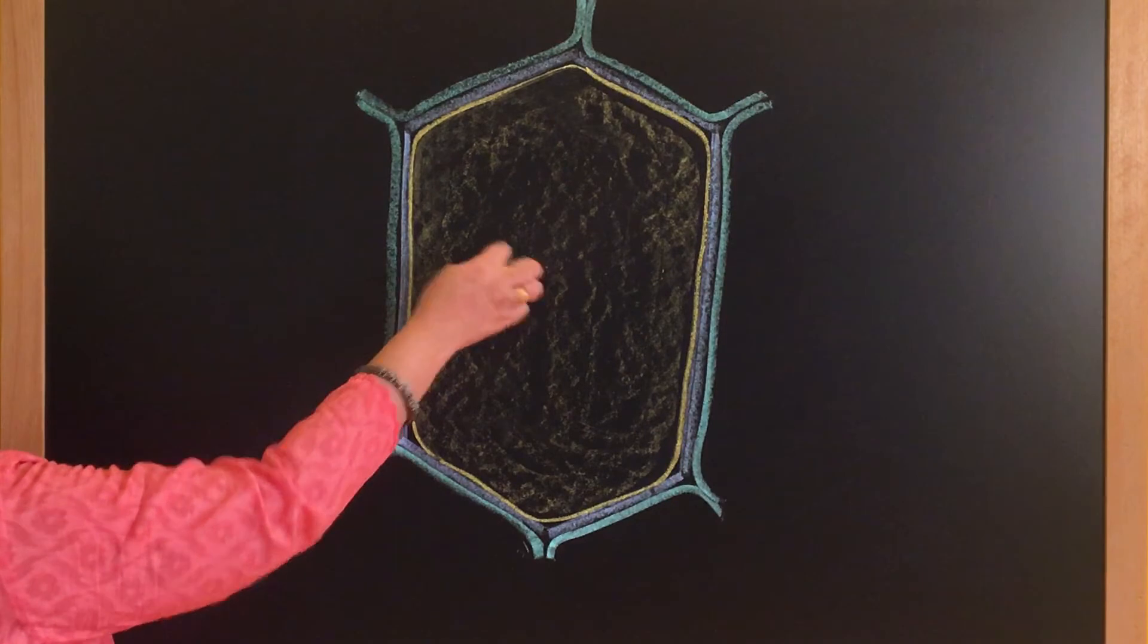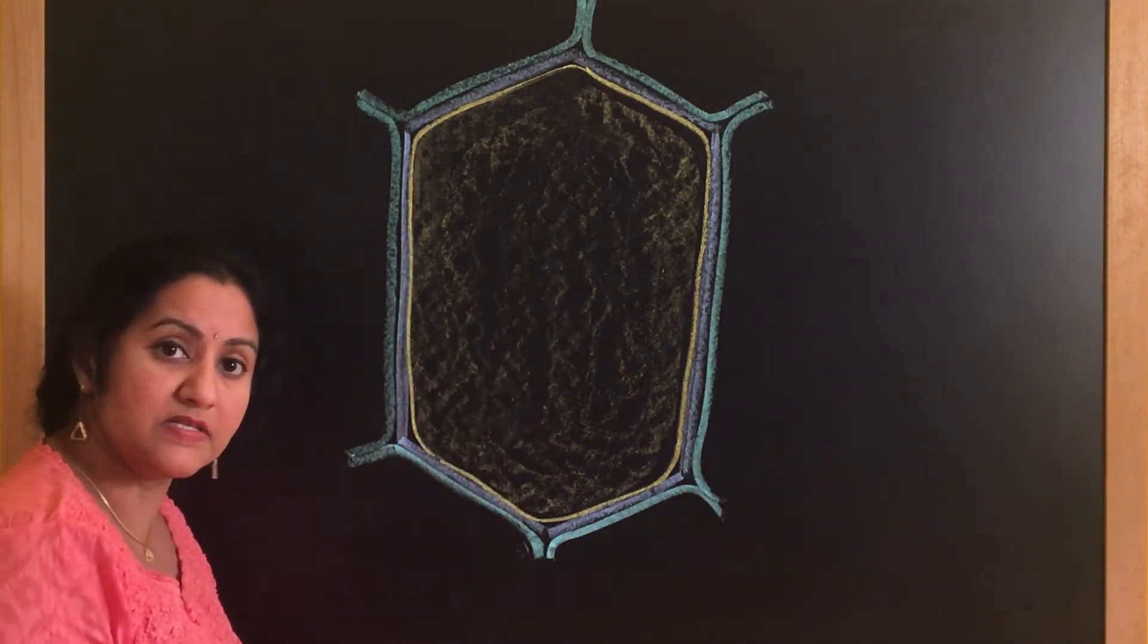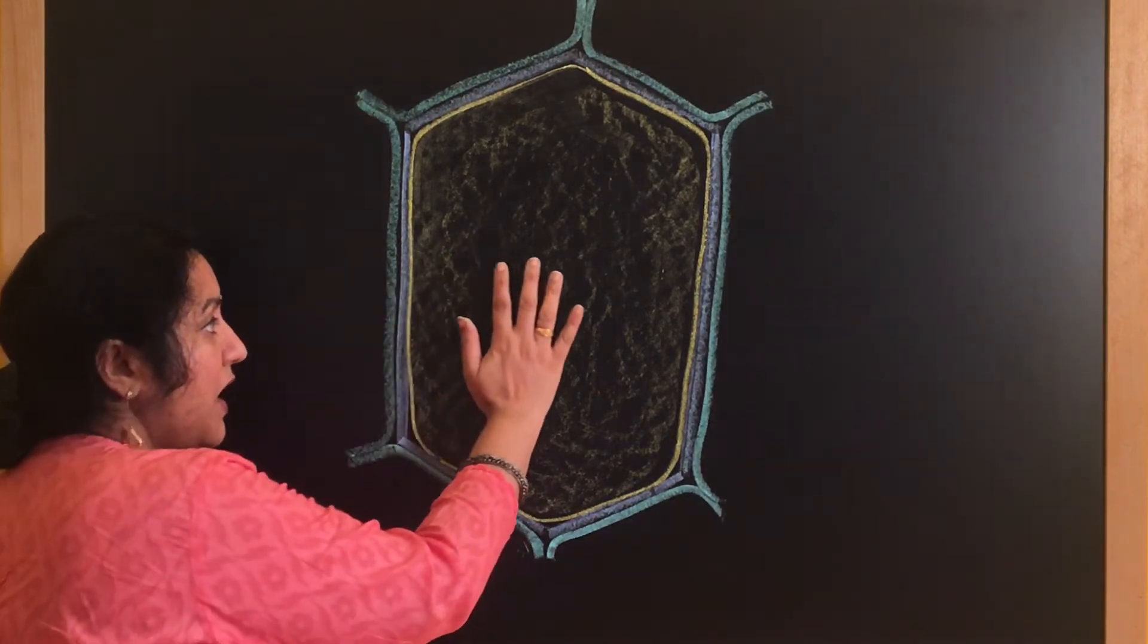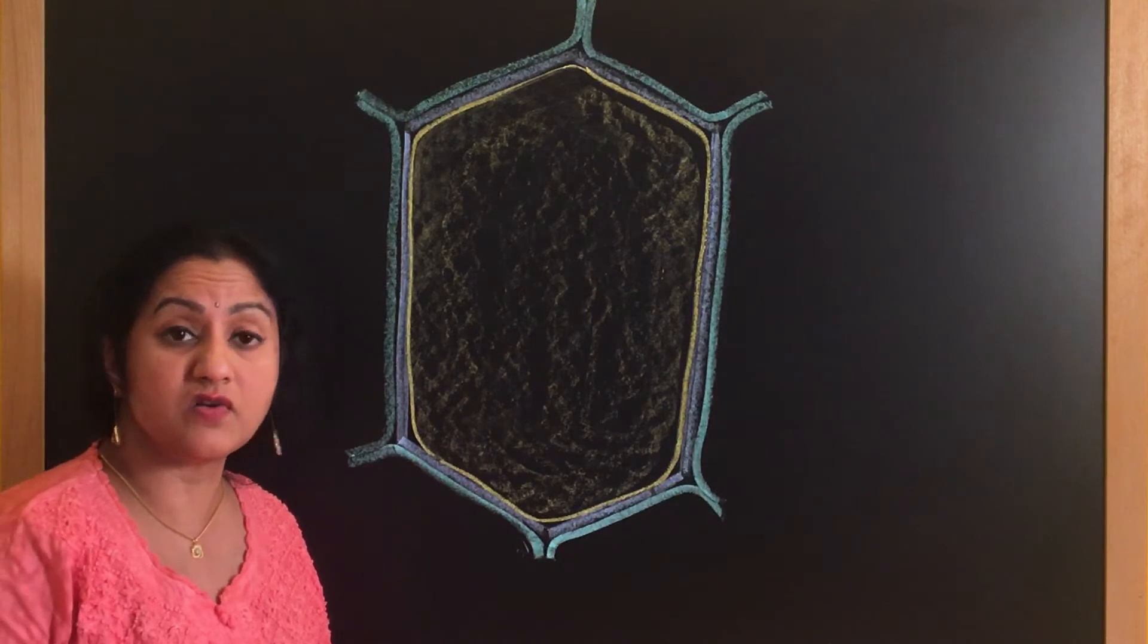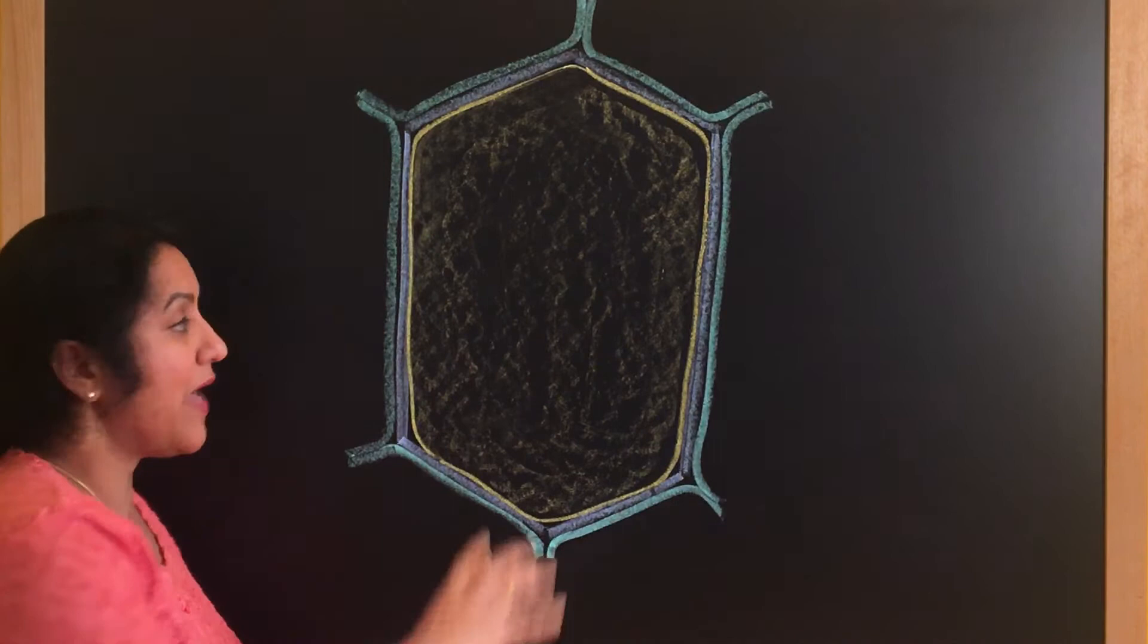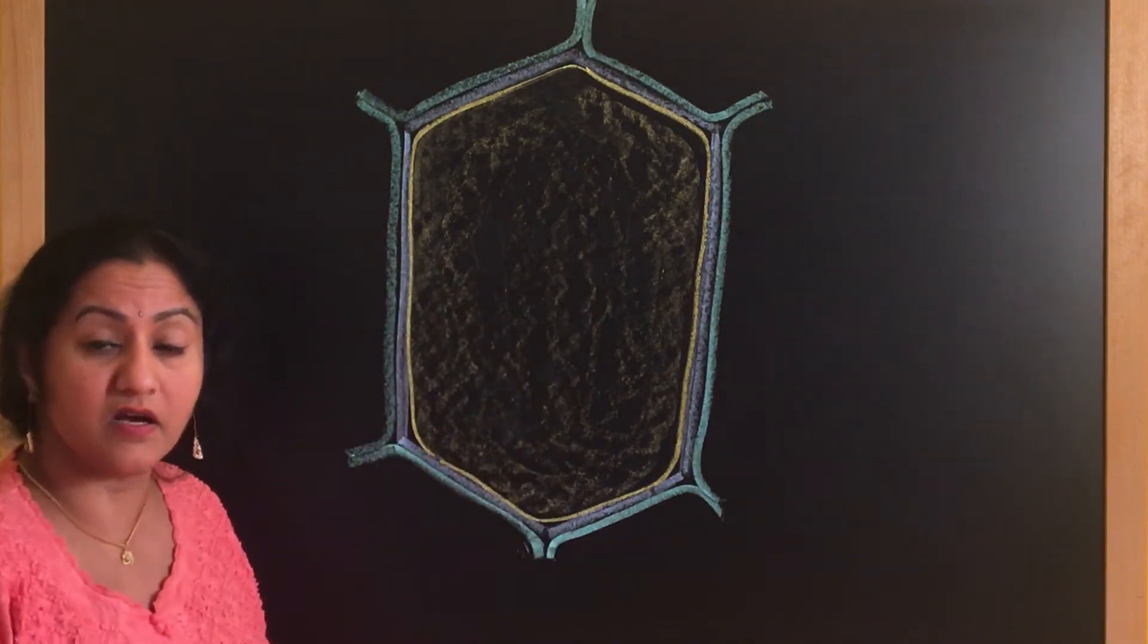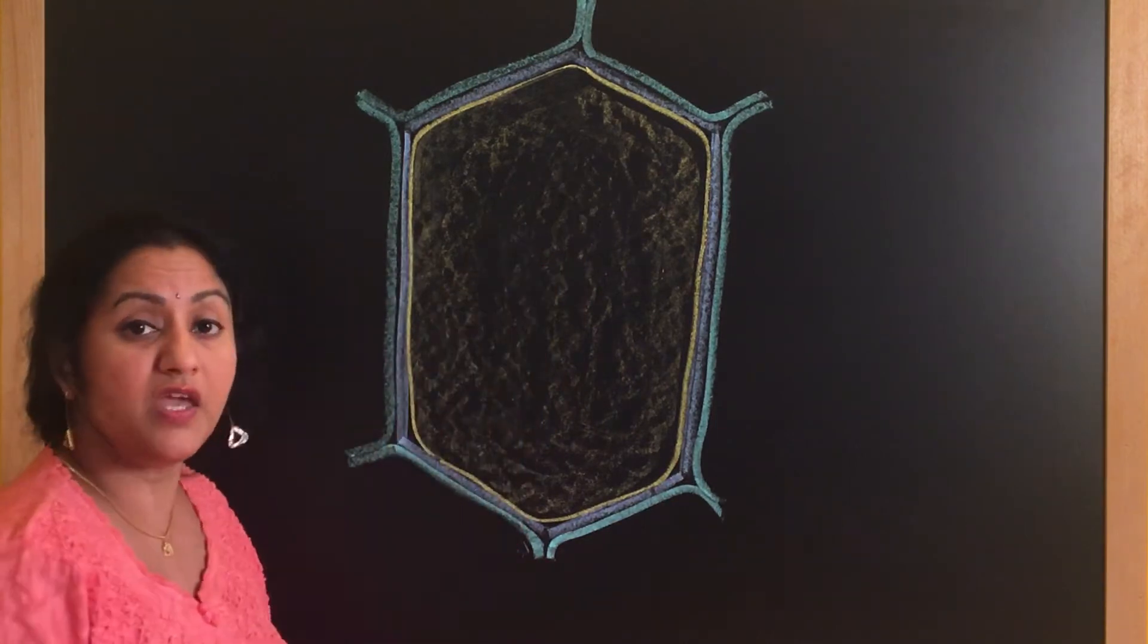Now let us move on to the nucleus. Do you think the plant cell is having a nucleus right in the center like an animal cell? No. Because the plant cell will be having a central vacuole, a large central vacuole where the cell sap is present. Lots of water and lots of solutes will be present, and this is present here right in the center.